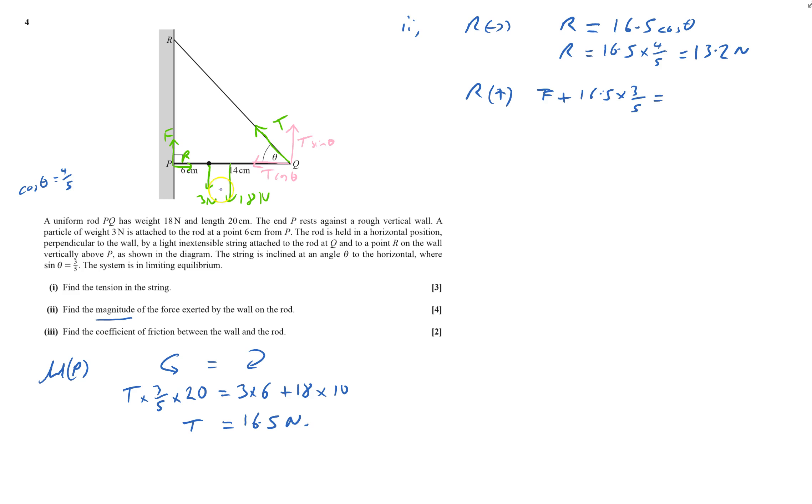That will equal the two forces going down, the 3 and the 18, so 3 plus 18. That says F will equal 21 minus that, which is 11.1. So I now know what F is and what R is.